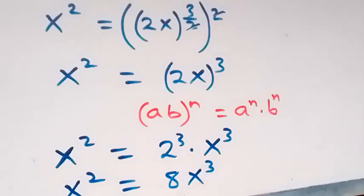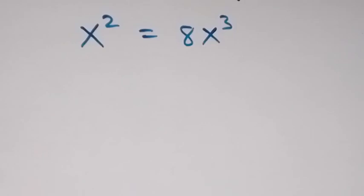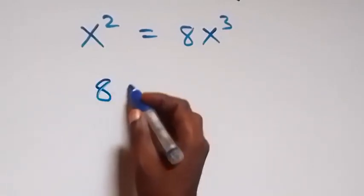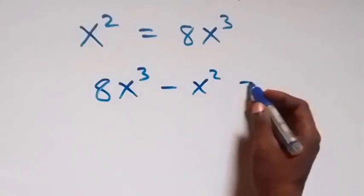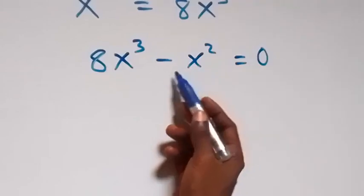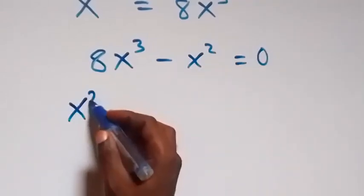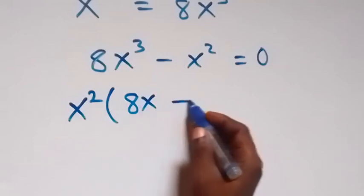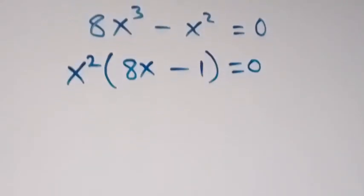Let's take everything to one side. We have 8x cubed minus x squared, which equals 0. We can factor x squared out — x squared is common — so we have x squared times the bracket 8x minus 1, equals 0.